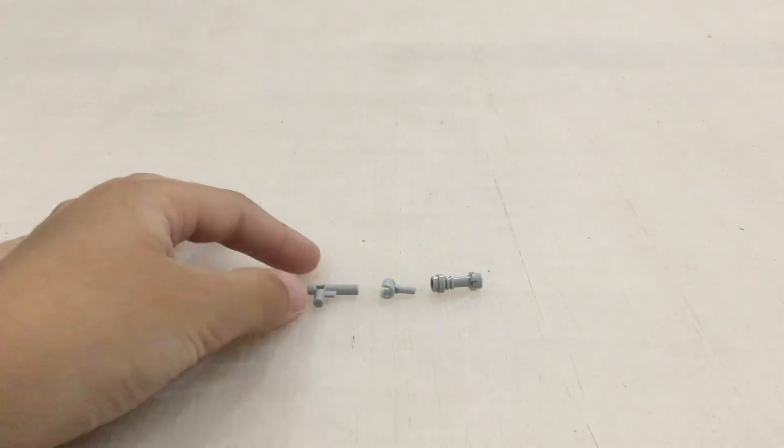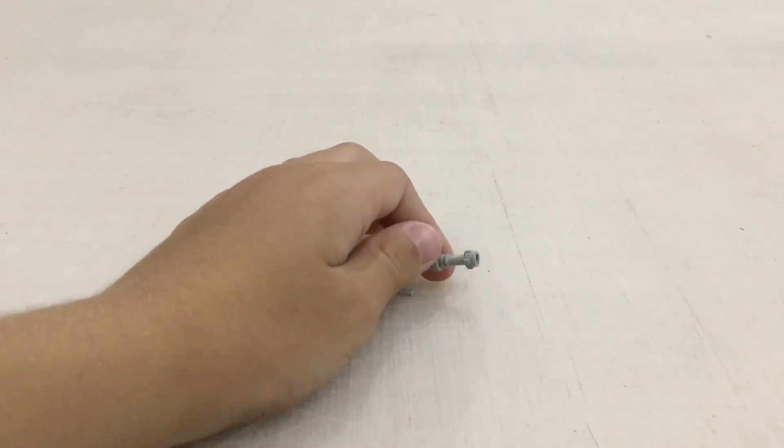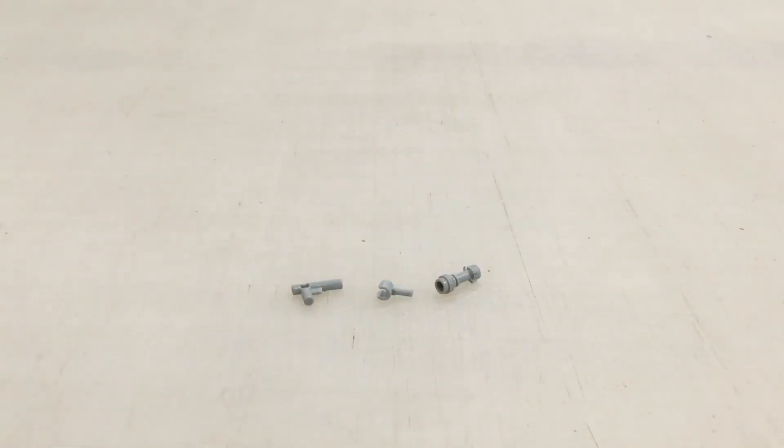Anyway, to make it you're going to need a light gray gun or a black gun, and then a light gray or black minifigure hand, and a light gray or black lightsaber handle.